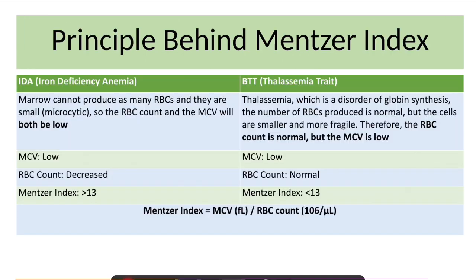Now let's discuss the principle behind the Mentzer Index. In iron deficiency anemia, the marrow is unable to produce many RBCs, and those produced are usually smaller in size. So both RBC count and MCV will be low. When MCV is low and RBC count is also decreased, the Mentzer Index is more than 13.